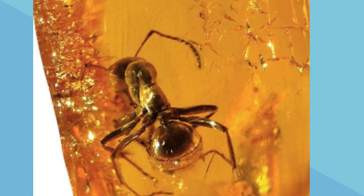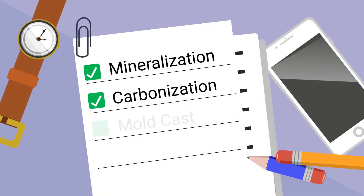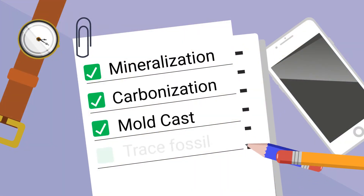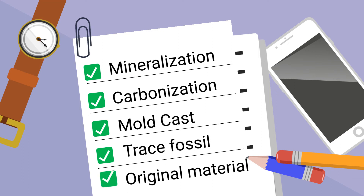So there we go — five different types of fossils and the remains of once living organisms. Thanks for watching Moo Moo Math.